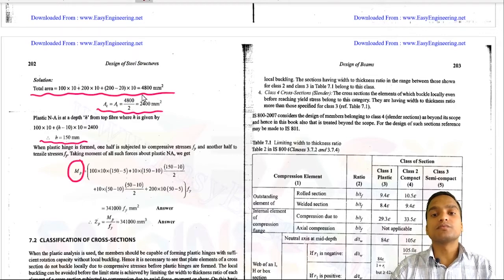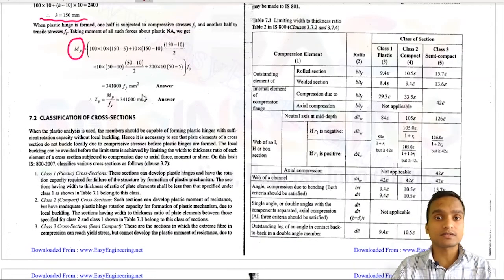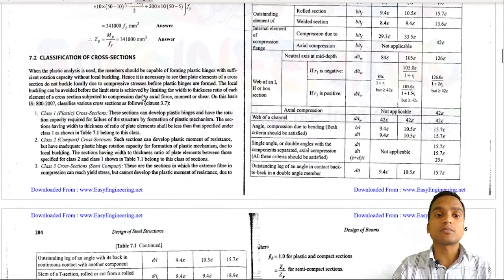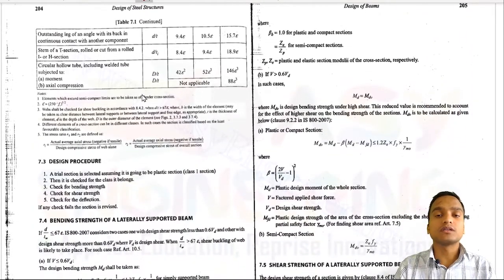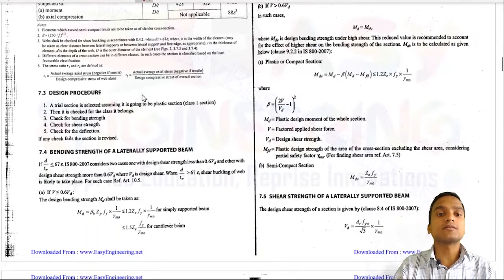We then discussed classification of steel cross-sections. There are four classes: plastic, compact, semi-compact, and slender. IS 800 does not account for slender class sections in design. We now proceed to the design procedures for laterally supported beams.